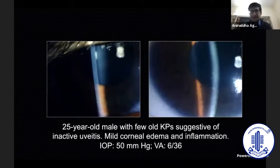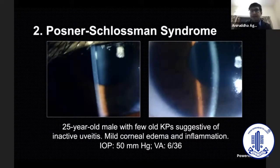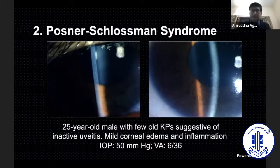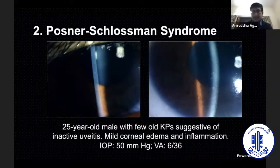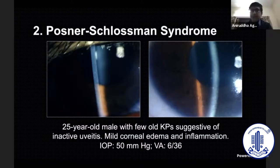The second presentation is that of a relatively white eye — a young patient, say a 25-year-old male, who has fewer keratic precipitates and almost negligible cells and mild flare, but very high intraocular pressure of 50 or even more, with corneal edema and inflammation. These are patients we classically call Posner-Schlossman syndrome.